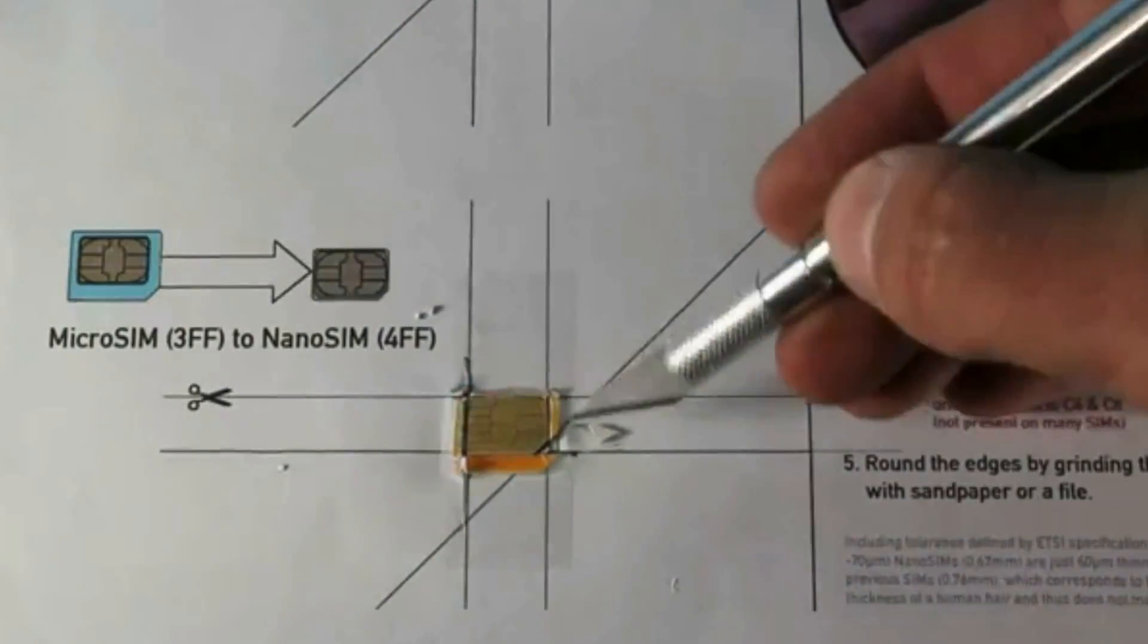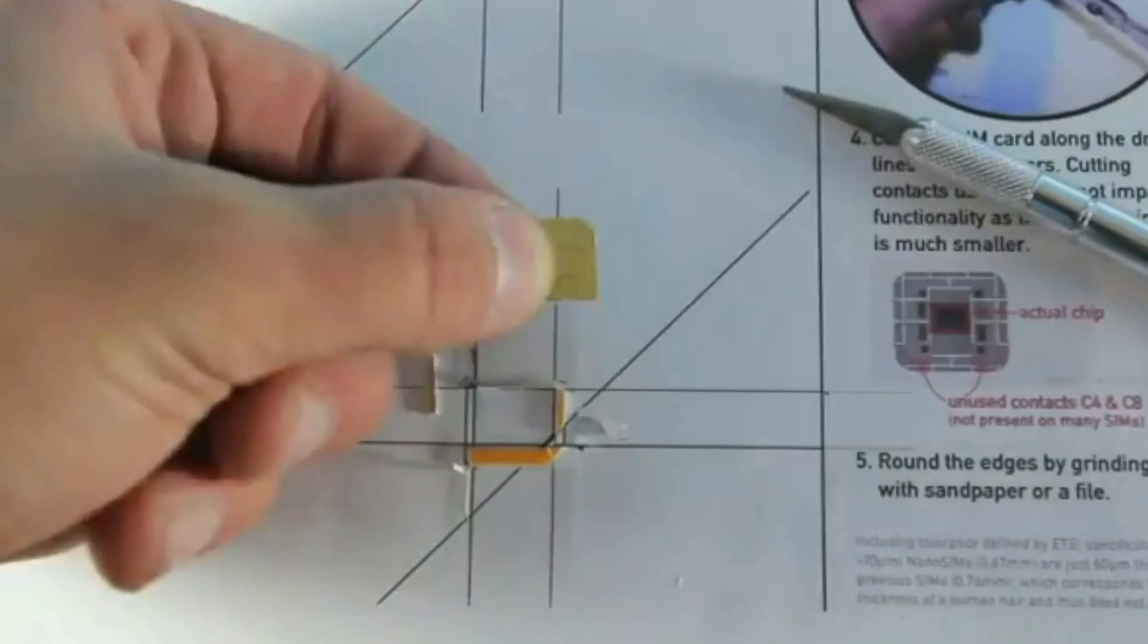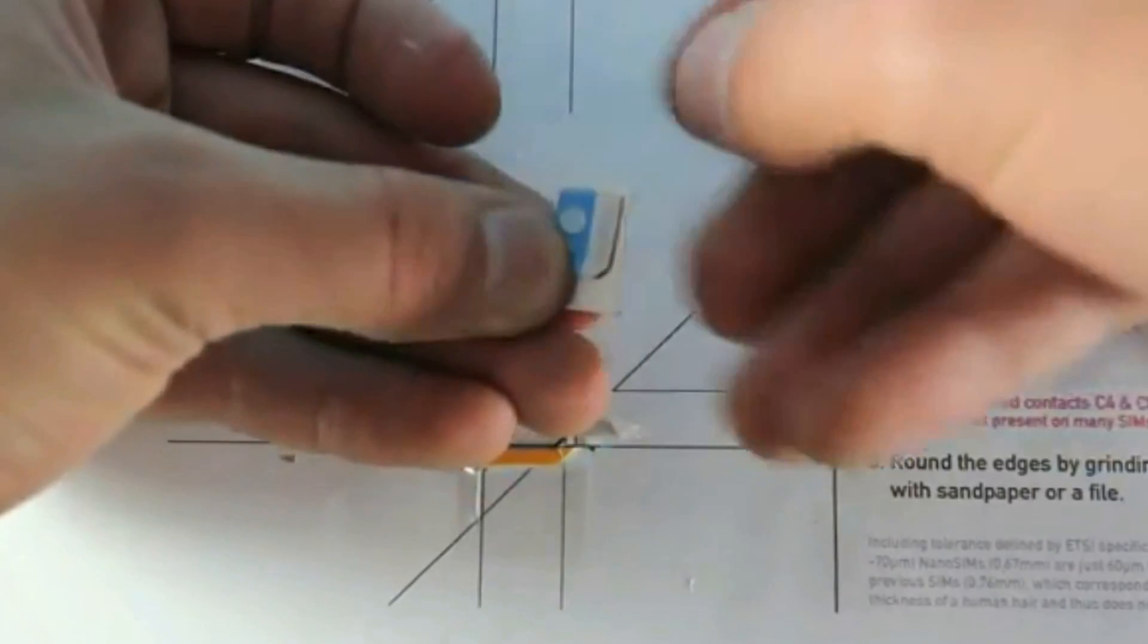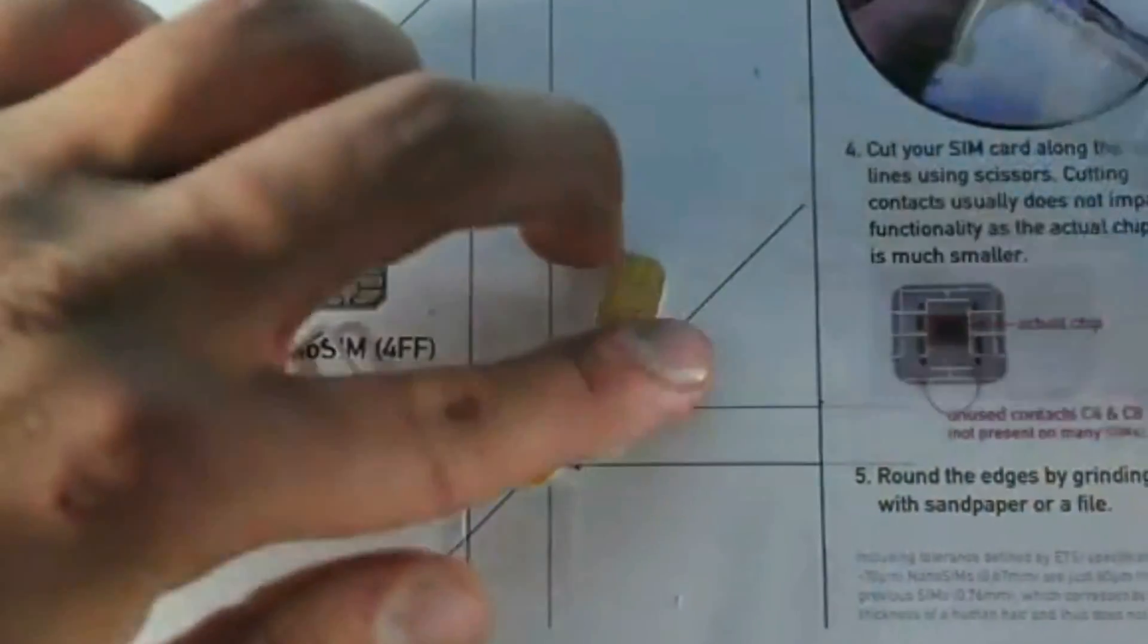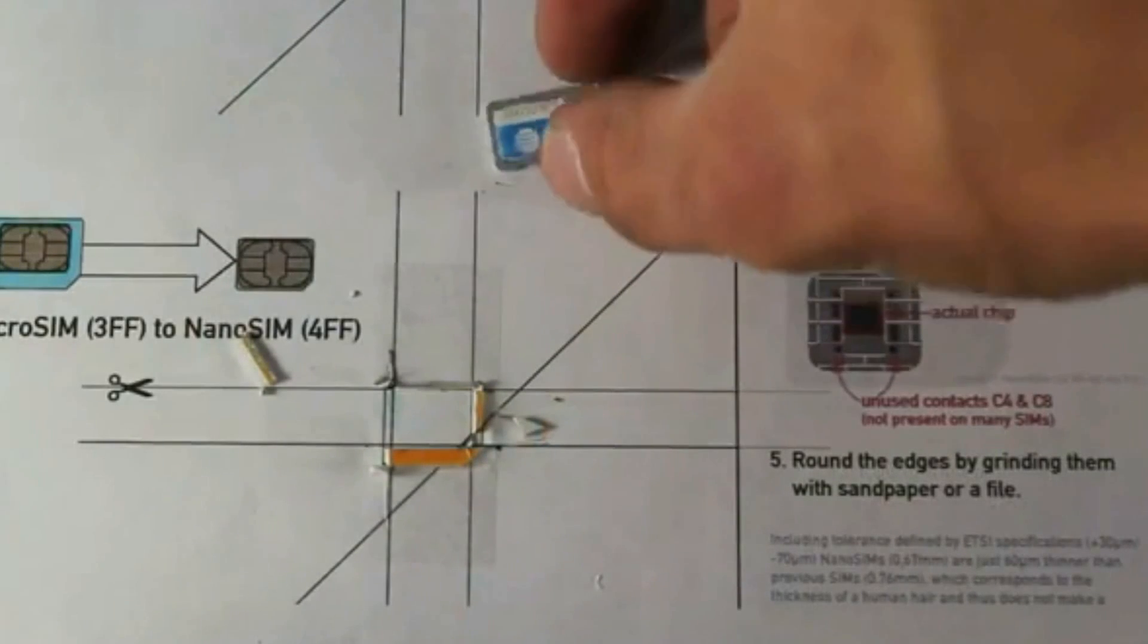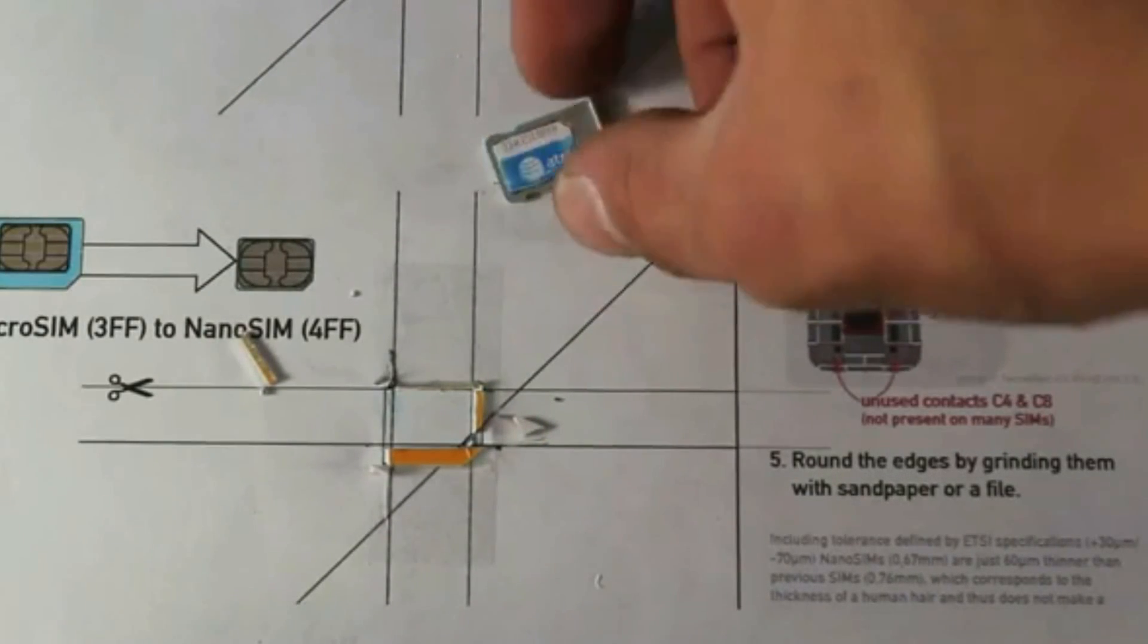Once you get the SIM card cut out, go ahead and remove it. You might notice that it doesn't fit into the SIM card tray at first and you might need to trim some off the edges. I actually left some plastic right here that I'm going to trim off. There you go, my nano SIM card fits perfectly in the nano SIM card tray without any play—sits very nicely.